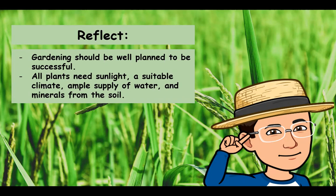Gardening should be well planned to be successful. All plants need sunlight, a suitable climate, and an ample supply of water and minerals from the soil. Remember that if you want to be successful in agriculture, all you have to do is have knowledge.